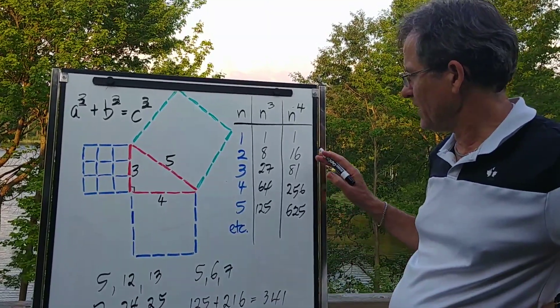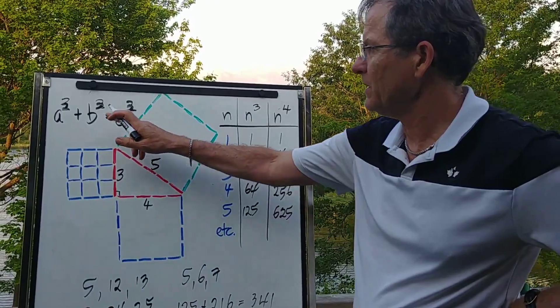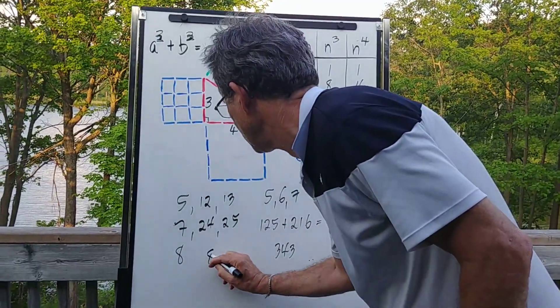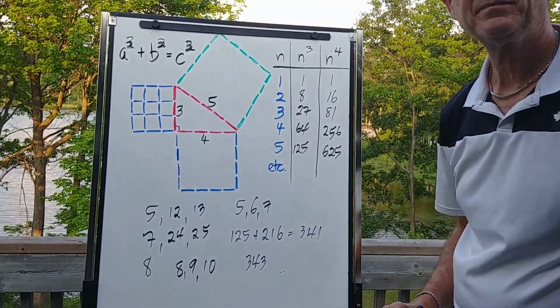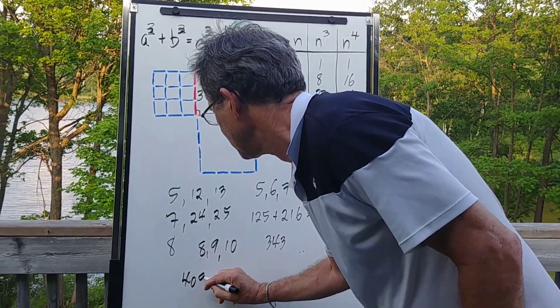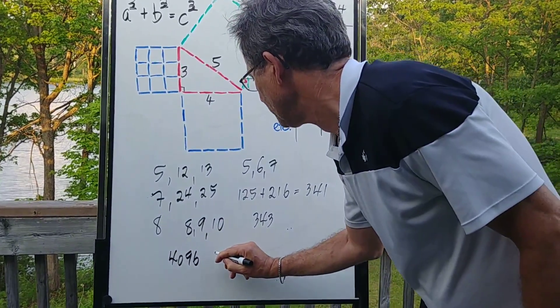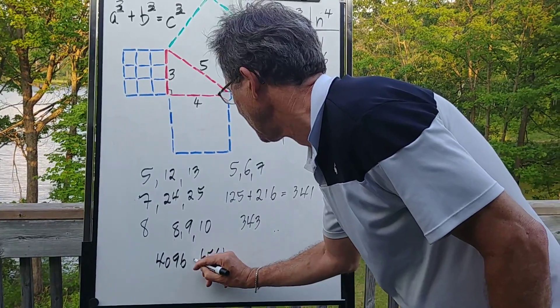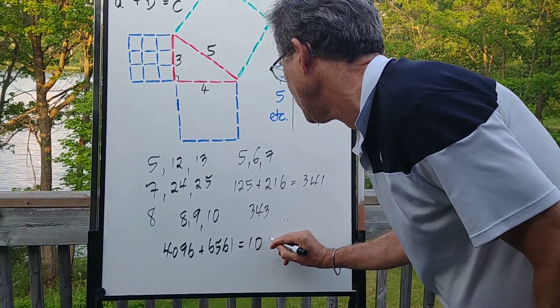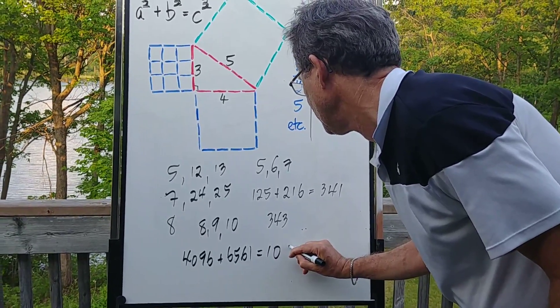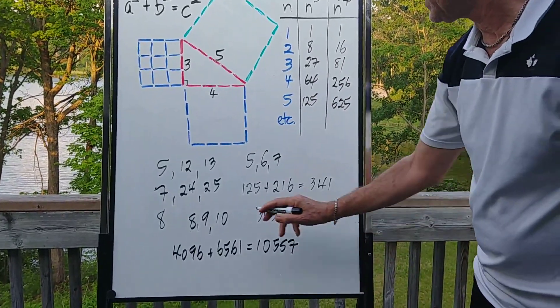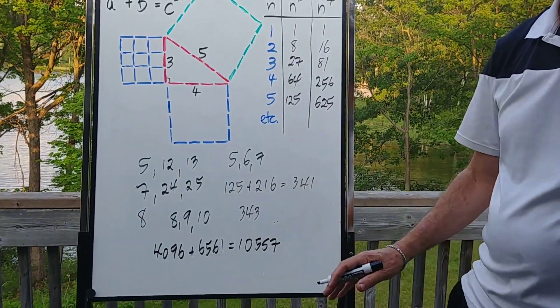See if you can find three numbers that satisfy when the exponents are 4ths. So you might try, for example, 8, 9, and 10. 8 to the 4 is 4096. 9 to the 4 is 6561. If you add them together, you're going to get 10,657. And that compares to 10,000 for 10. So that doesn't quite work either.